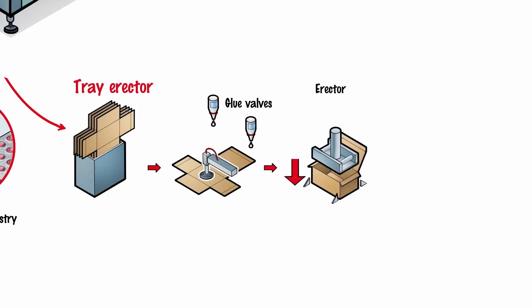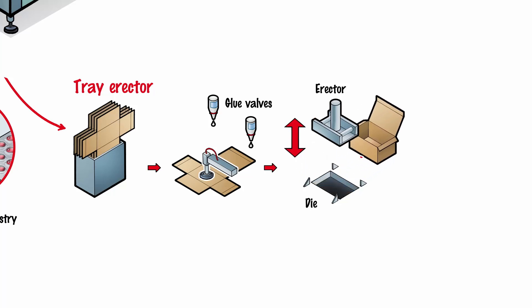While the glue is still hot, the erector punch forces the box through the die. The box is now in the correct shape and has been glued.